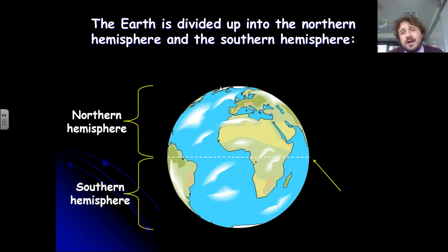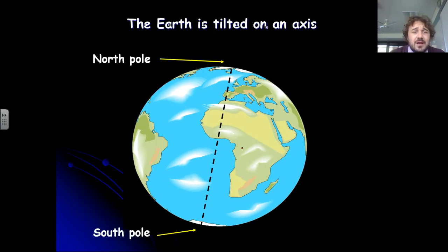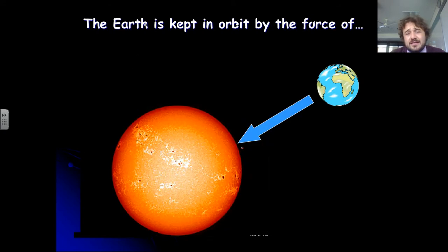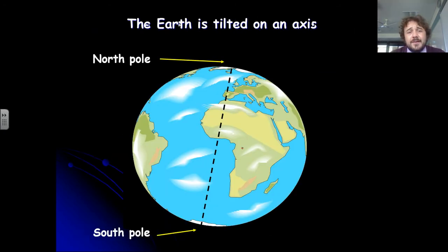So let's divide up the northern hemisphere and the southern hemisphere. We've got this here, so just quickly draw that down. We've got the equator across the middle and it's tilted on an axis. So this is the line that it spins around, so it sort of goes around like that.